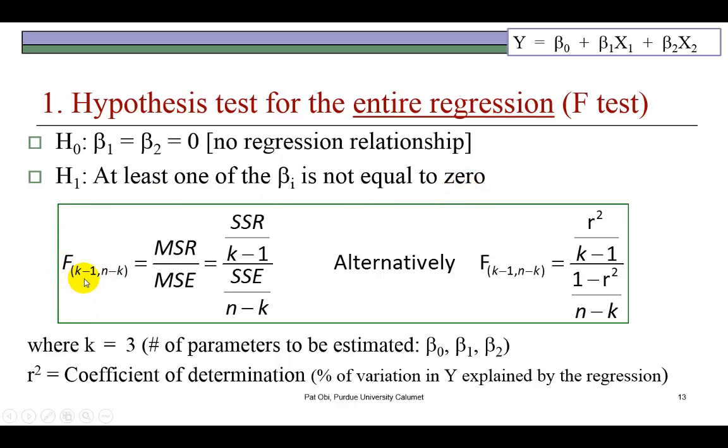This is the F statistic. It's the ratio of mean square regression, a measure of explained variation, and the mean square error, a measure of the unexplained variation of the regression model.